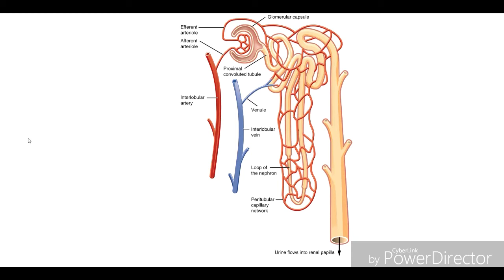Next is Henle's loop, which has two parts: the descending loop and the ascending loop. The descending loop is permeable to water, while the ascending loop is impermeable to water. The distal convoluted tubule, or DCT, is a collecting tube that connects to the collecting duct in the body.